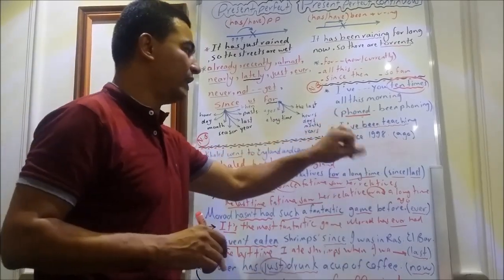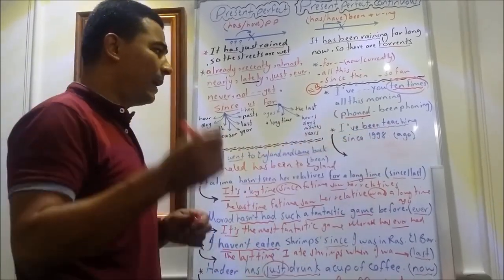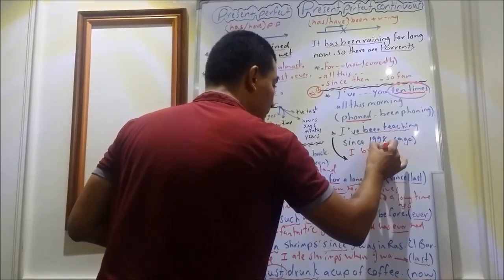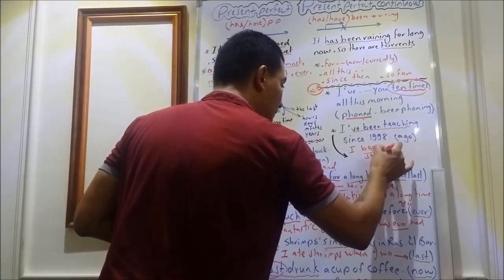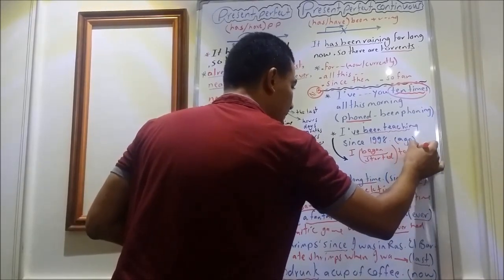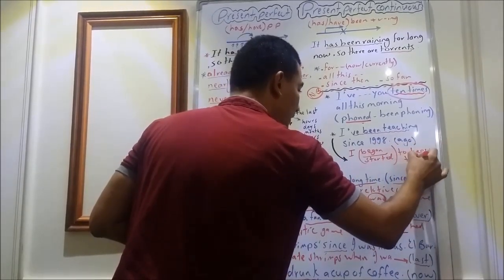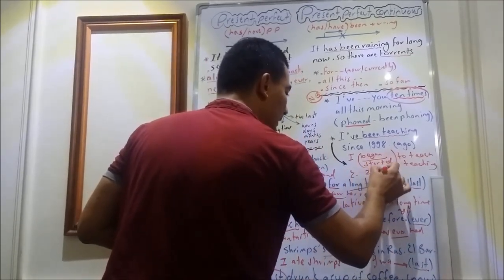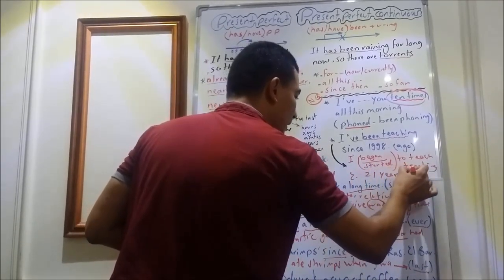Of course, this is present perfect continuous, since plus point of time. So, I can simply say, I began or even started to teach or teaching English 21 years ago.